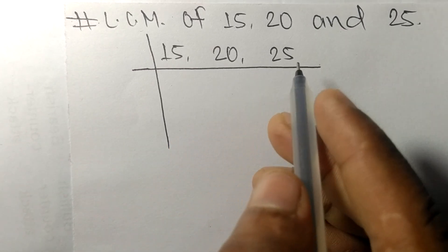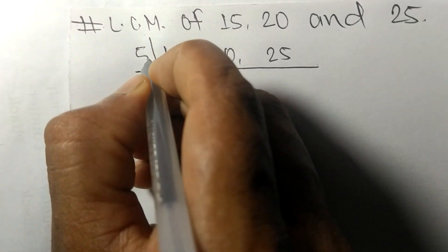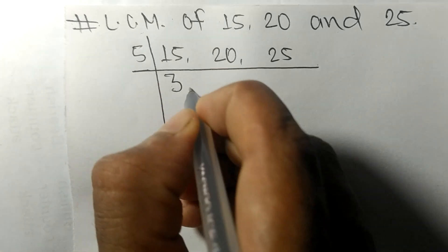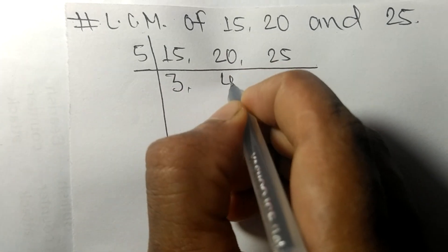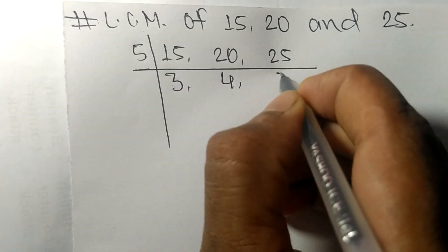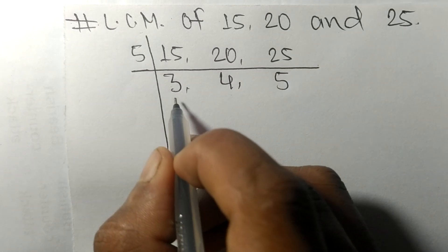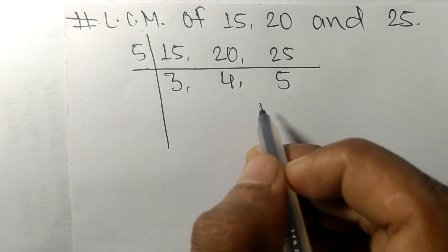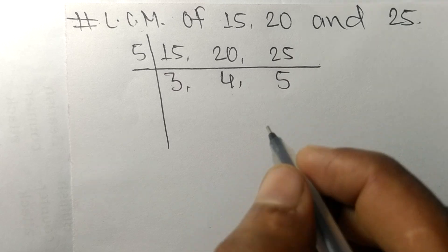So these all numbers are divisible by 5. 5 times 3 mean 15, 5 times 4 mean 20, 5 times 5 mean 25, so these numbers are not exactly divisible by same number.